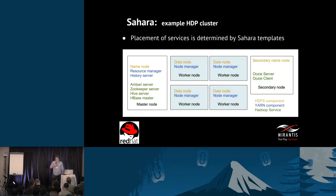Here is an example template for an HDP cluster. It consists of three node groups: the master node group contains a name node, the resource manager, history server, and additional services like Ambari used for actual cluster provisioning. It could also contain master services for HBase master. The worker node group contains the main worker processes — data node for HDFS and node manager for YARN. There's also a secondary name node node group, plus for example an Oozie server and client.